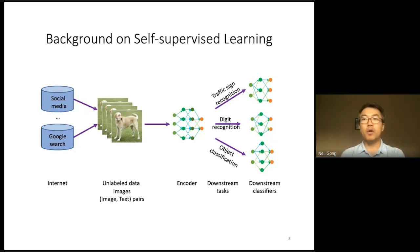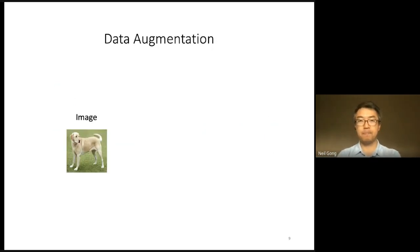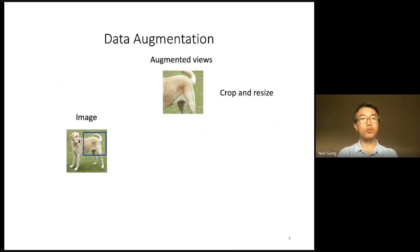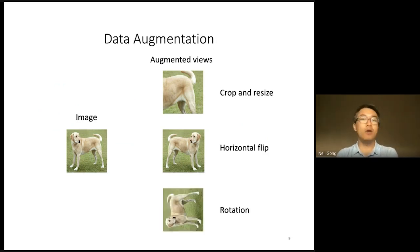I will describe a little more detail about how to pre-train an encoder from unlabeled data and how to build a downstream classifier from a pre-trained encoder. Data augmentation is a key component of pre-training an encoder. Suppose we are given an image; data augmentation aims to create random augmented views of this image. For instance, we can crop a random region of the image and then resize it to have the same image size to create an augmented view. We can also flip the image, rotate the image, or use many other operations to create random augmented views.